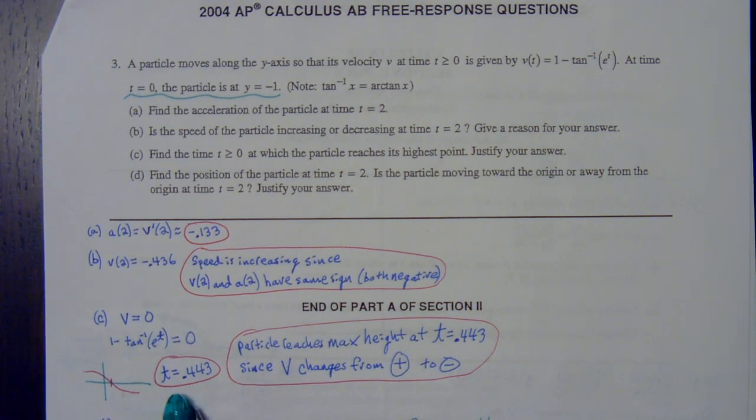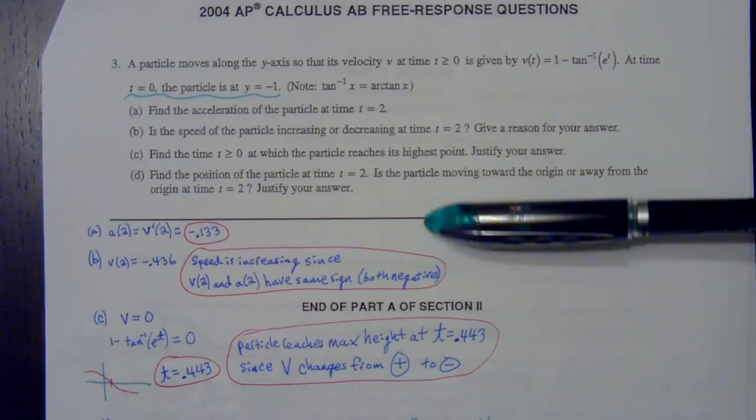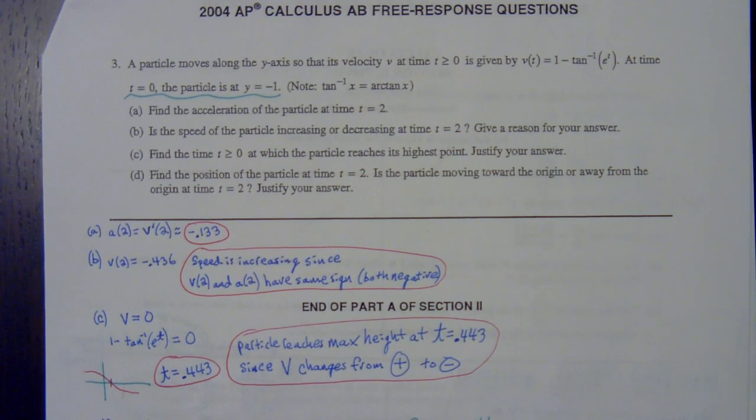The calculator will find that number for you. Make sure we're justifying that properly. A through C should be perfect for everybody if we're working hard at these things because we'll keep seeing those concepts over and over again.